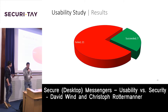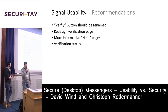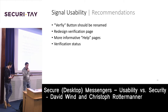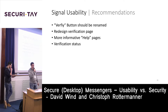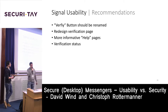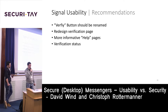We wrote a paper with recommendations. The 'verify' button should be renamed — for example to 'show keys' — because 'verify' is confusing. They should redesign the verification page because two fingerprints are not the best choice. The QR code should be on the same page with a help message explaining what to do. It would also be nice to have a verification status — a tick showing which contacts you've already verified.